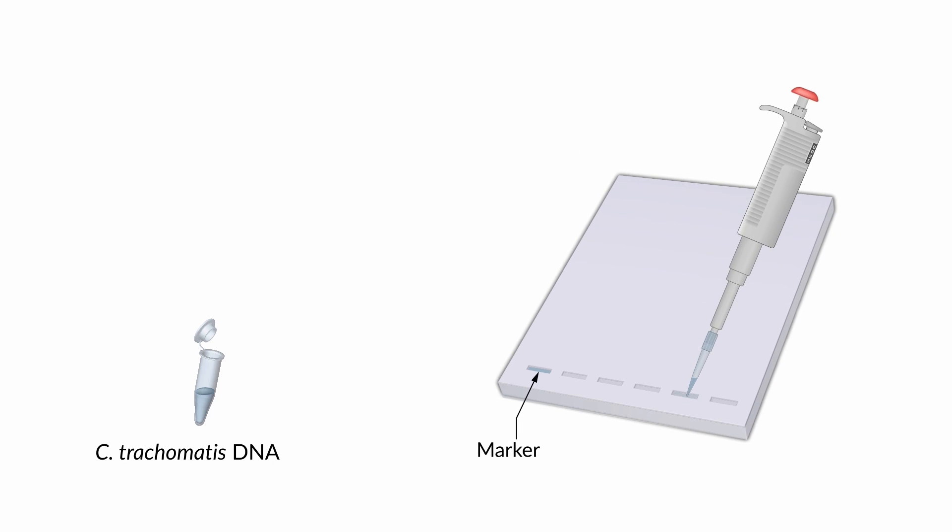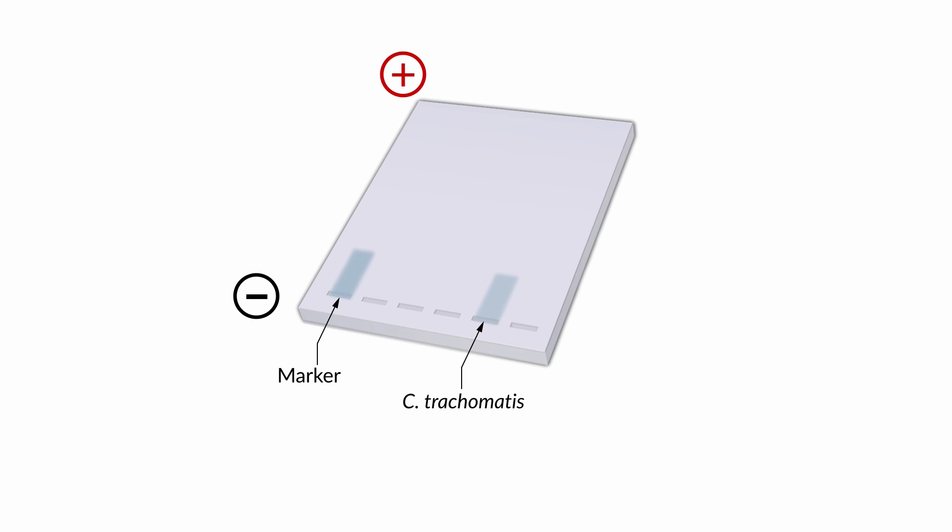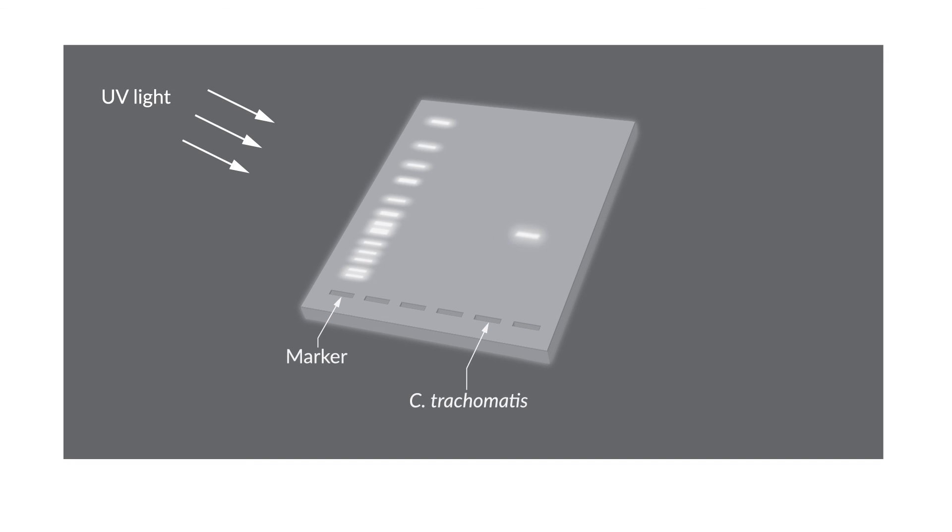An example of the application of PCR is the detection of pathogen DNA. The method's high specificity even enables microorganisms to be detected that are difficult or impossible to cultivate.